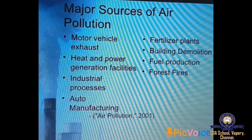Acid rain occurs when acid chemicals are swept into the air and into areas where it is raining, and acid falls to the ground in the form of rain, smoke, and fog. Long-term effects on human beings include chronic respiratory disease, lung cancer, heart disease, and damage to the brain, nerves, liver, or kidneys. Short-term effects include irritation to eyes, nose, and throat, headaches, and allergic reactions.